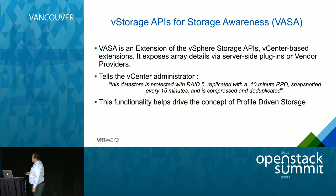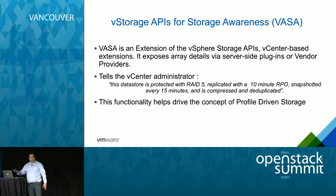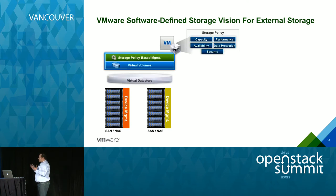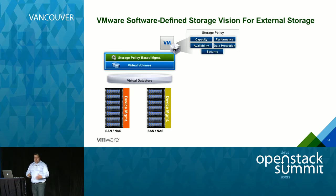Another example is VASA — vStorage API for Storage Awareness. This is a communication protocol that lets vCenter know that a datastore is protected by RAID 5, replicated with a 10-minute RPO, snapshotted every 15 minutes, and compressed and deduplicated. This feeds into software-defined storage: you define a policy covering capacity, performance, availability, and data protection, and vSphere negotiates with attached storage to place the workload appropriately.